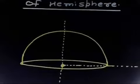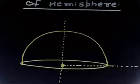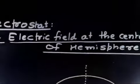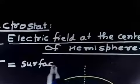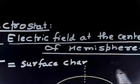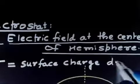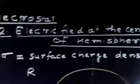This is a fairly easy problem: find the electric field strength at the center of a hemisphere of radius R, uniformly charged with surface charge density sigma. So sigma is the surface charge density and R is the radius of the hemisphere — both are given.